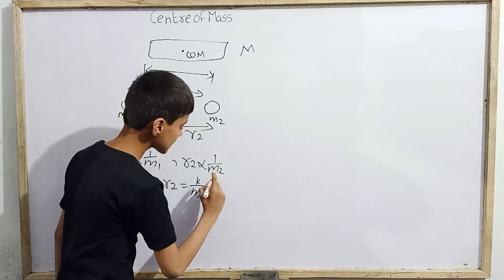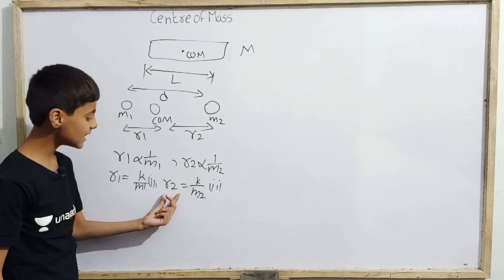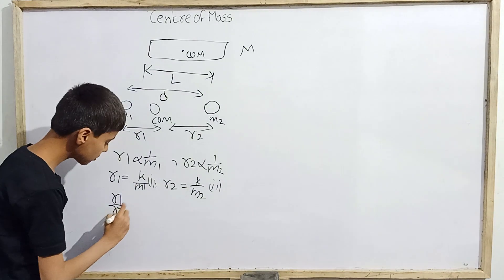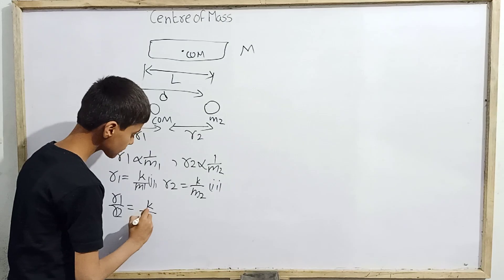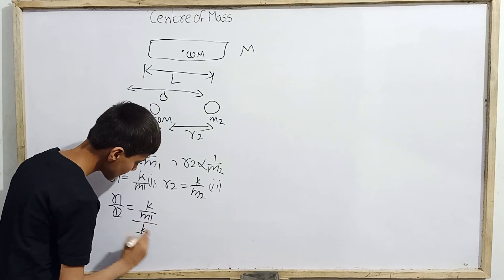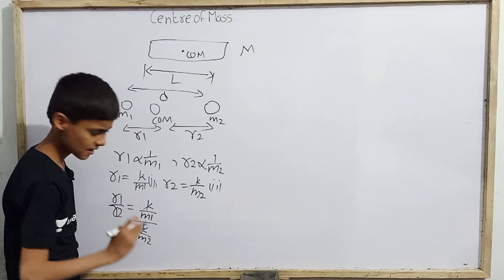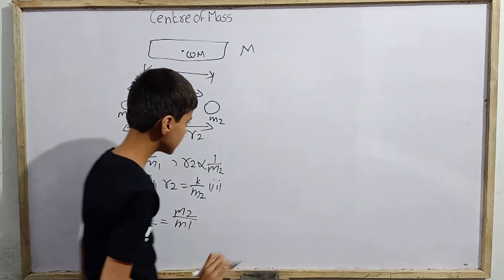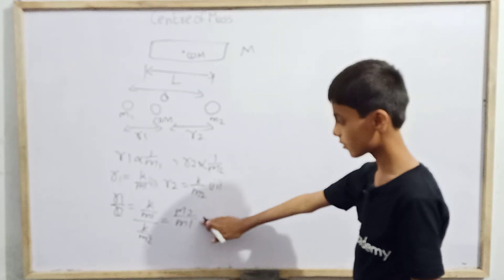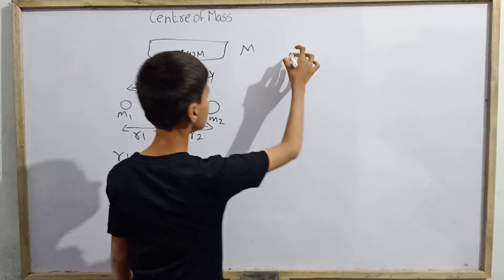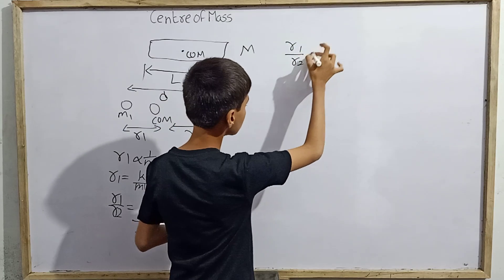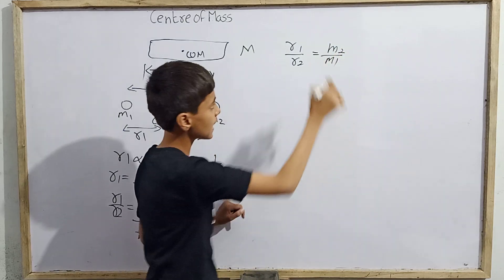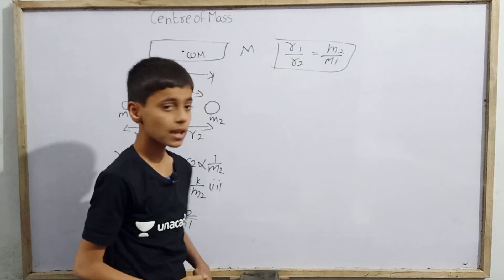Call the first equation r1 = k/m1 and the second r2 = k/m2. If we divide equation one by equation two, we get r1/r2 = (k/m1) / (k/m2). The k's cancel, giving us r1/r2 = m2/m1.